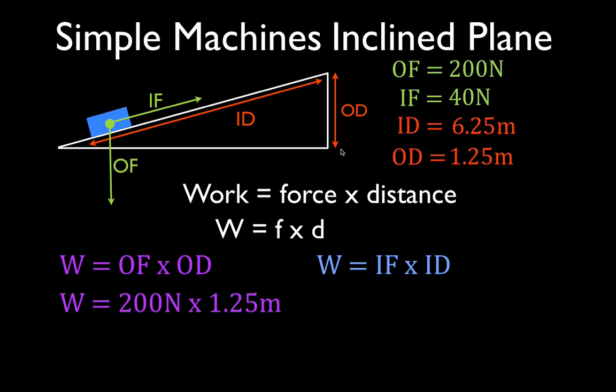It's the weight of the object times the height. And that would be, if the object was right here, how much work would we do just lifting it straight up? We would do 250 joules of work. J stands for joules.